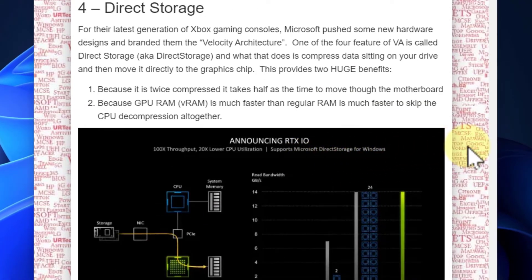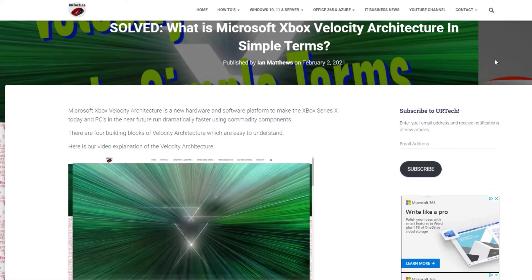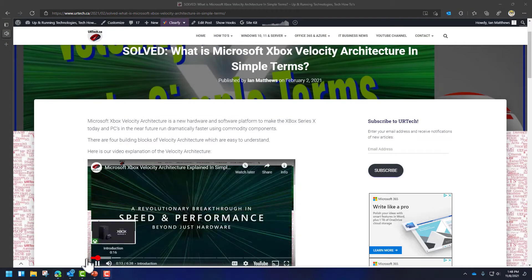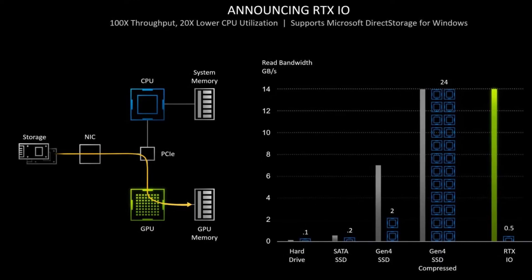Direct Storage — this is really neat. Direct Storage came out of Microsoft's Velocity Architecture from their Xbox gaming division. What Direct Storage does is compress data that's sitting on your hard drive and then move it directly to the graphics chip. This provides two huge benefits: because the data is compressed before it gets sent through the circuits on your board, it moves twice as fast. Secondly, because GPU RAM or VRAM is so much faster than regular RAM, and GPU decompression is faster than CPU decompression, it's way faster.